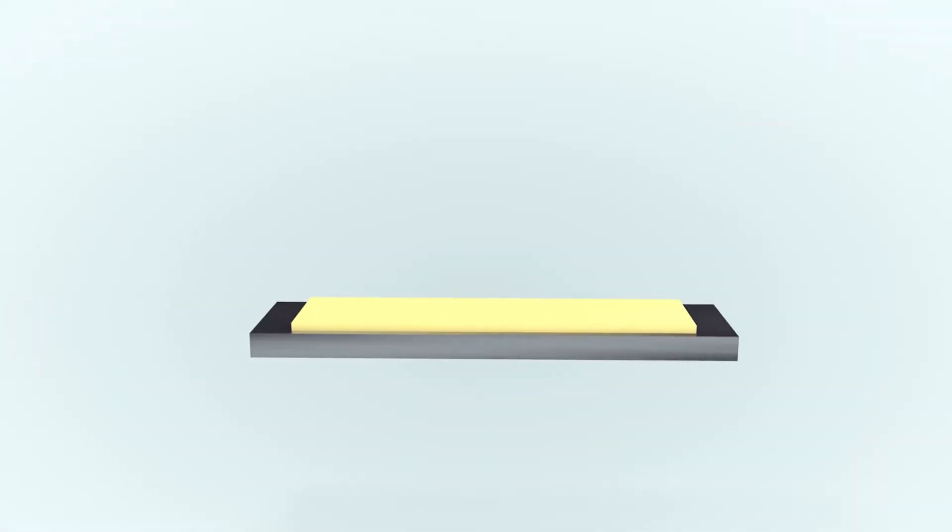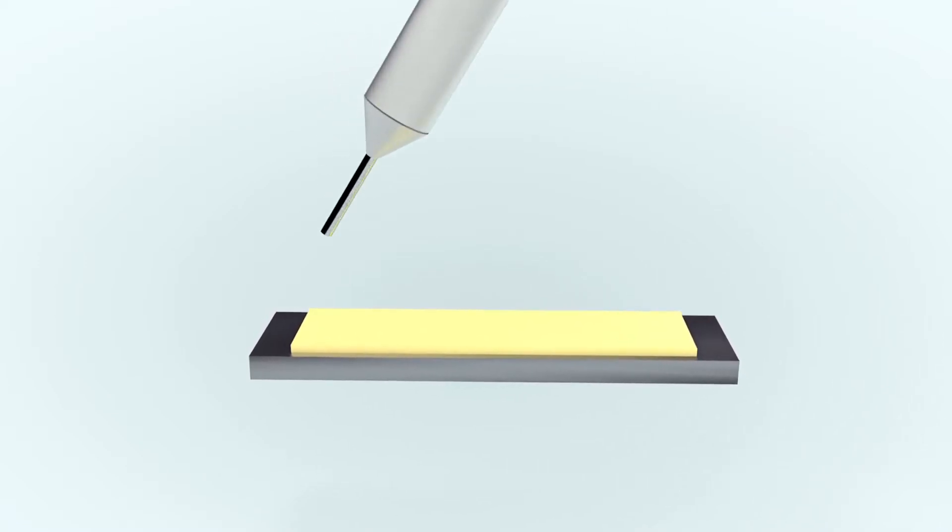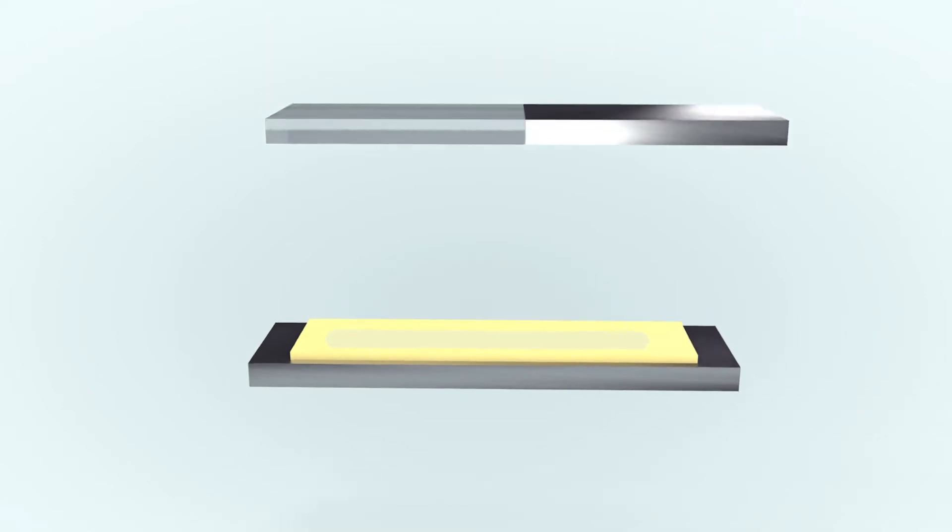The UV cure reduces fixturing time while heat ensures a complete cure throughout the bond line, especially for areas not accessible to UV light.